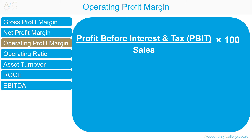How does operating profit margin differ from net profit margin? Both consider the organisation's other day-to-day costs, but operating profit margin does not include interest or tax costs. This means operating profit margin is better for comparing organisational performance relative to other organisations. Other organisations may have different capital structures — with operating profit margin, interest costs are not included. Other organisations may be in different tax jurisdictions — with operating profit margin, tax costs are not included, making comparisons on results more meaningful.